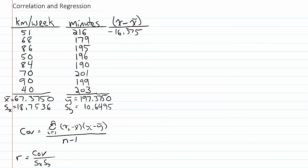For the second row, I take 68 minus 67.375, and I get 0.675. I continue in this fashion until I've computed the deviation scores for every observation of x.